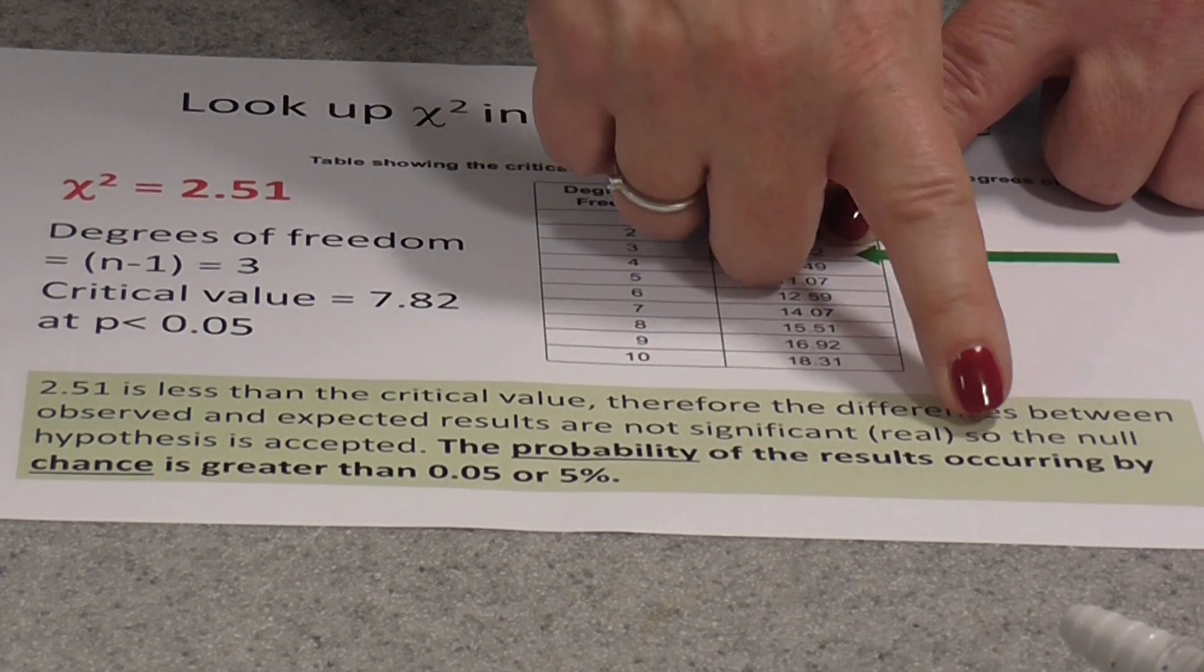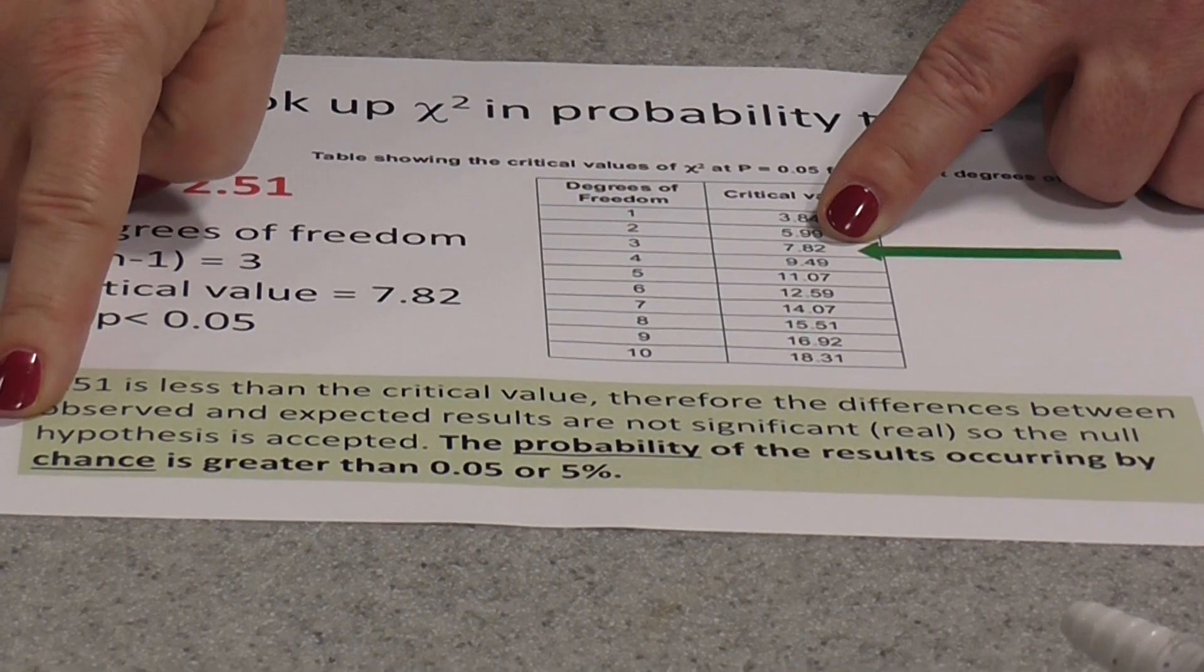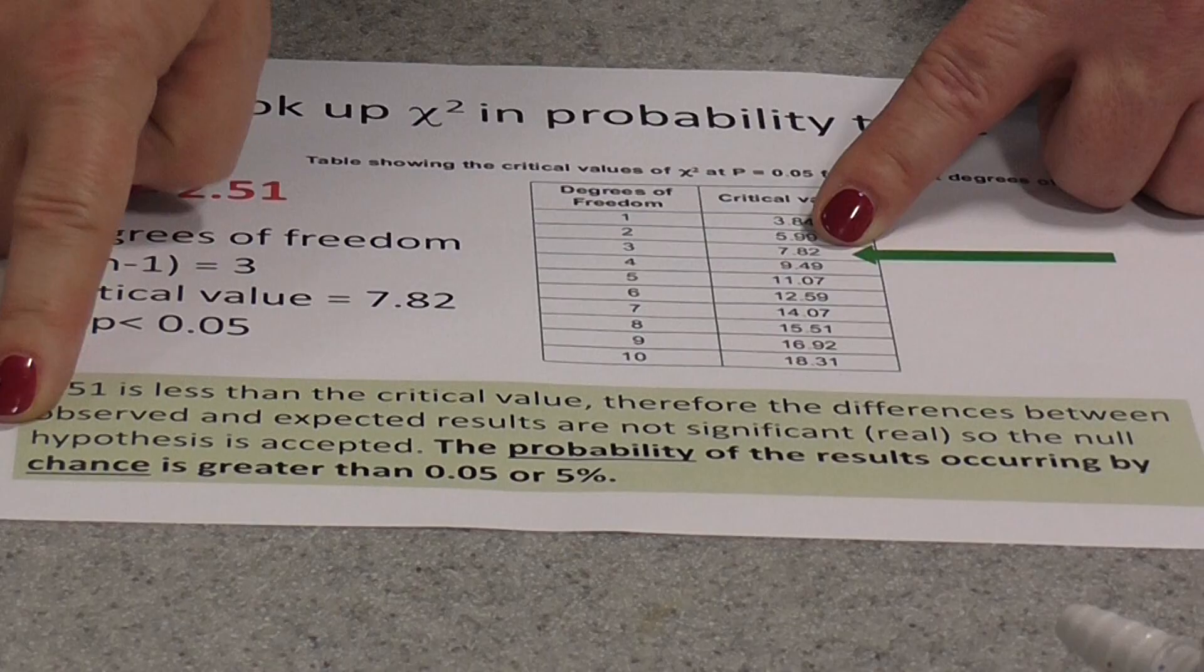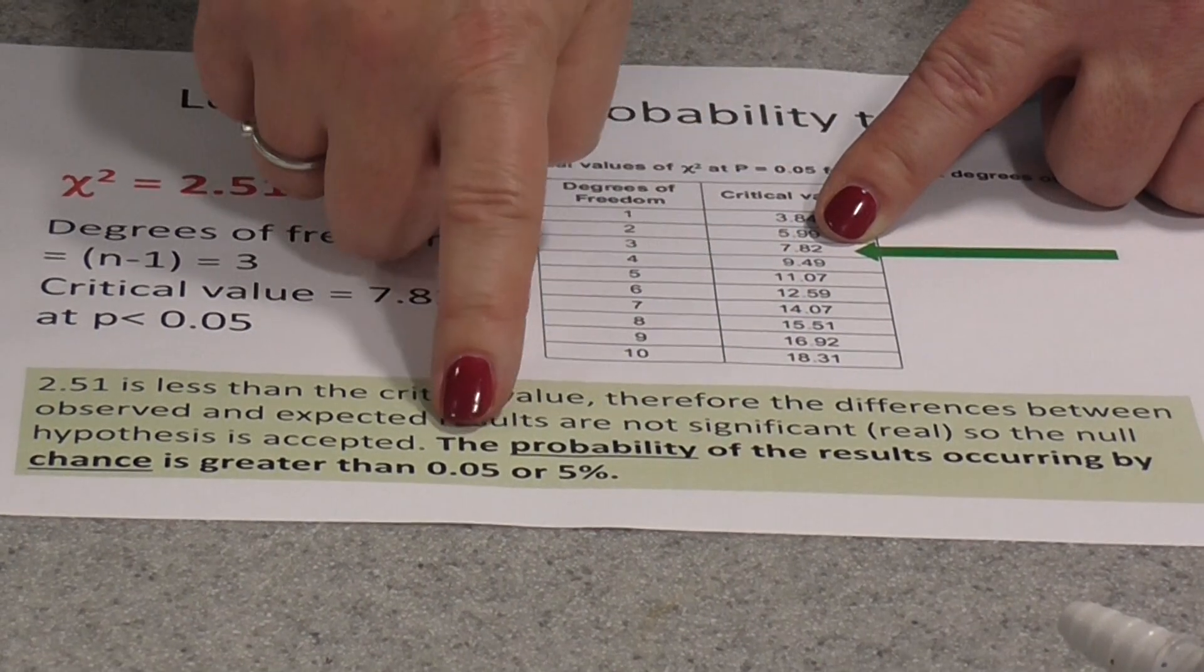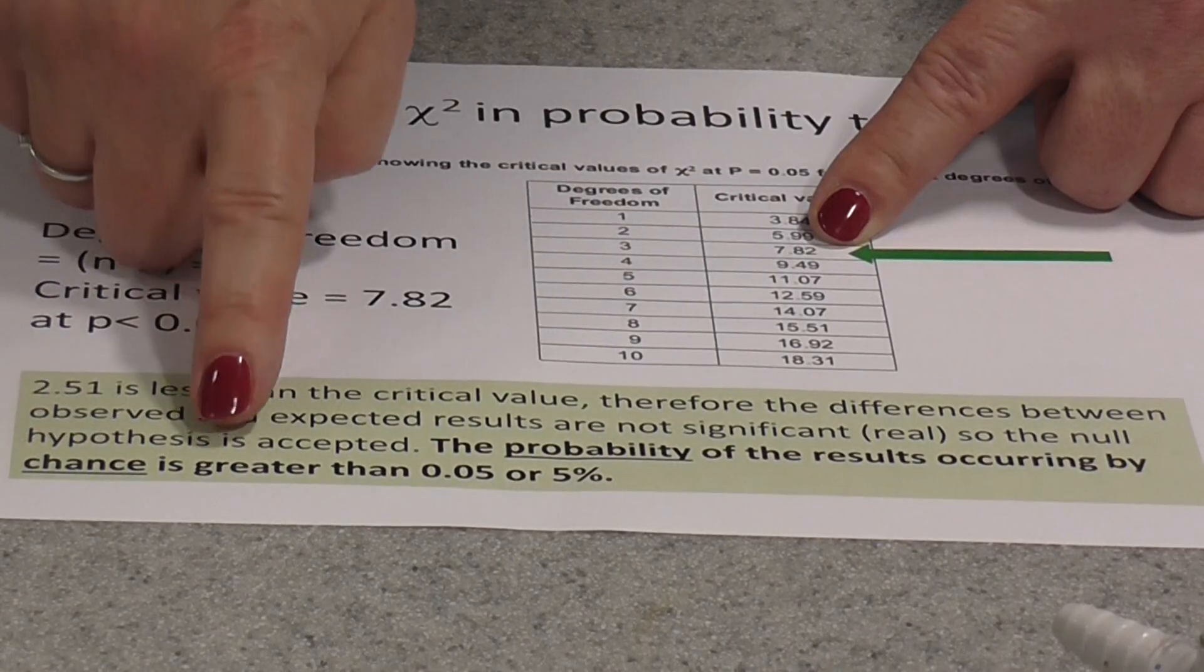In other words, there's not a real difference. So the null hypothesis has to be accepted. Basically the maggots have no preference where they moved in this particular investigation. So what we would write in our conclusion is that the probability of the results occurring by chance is greater than 0.05,